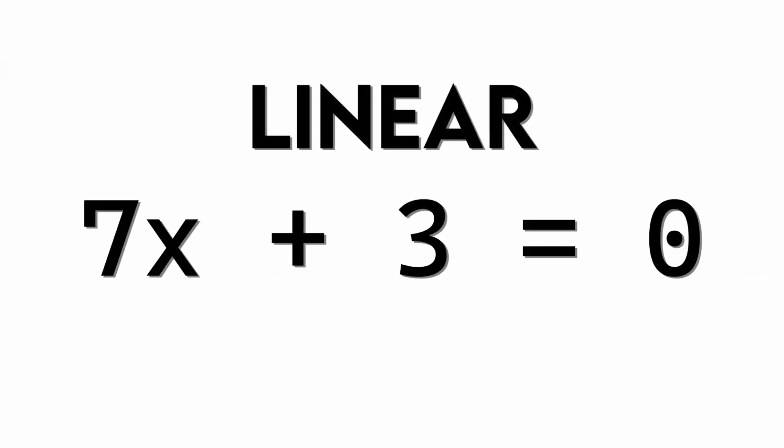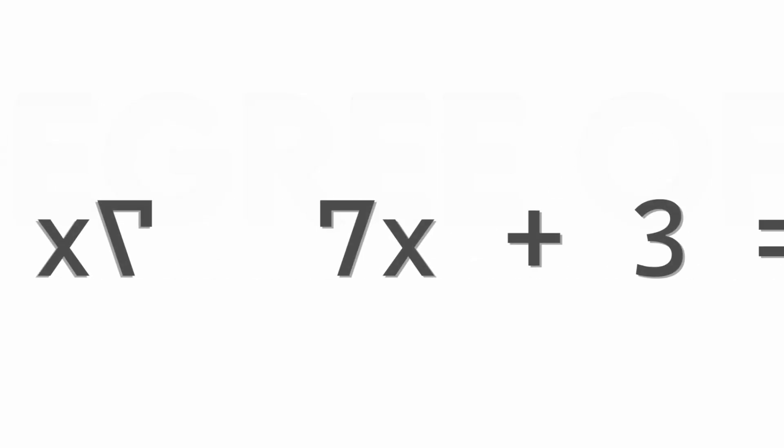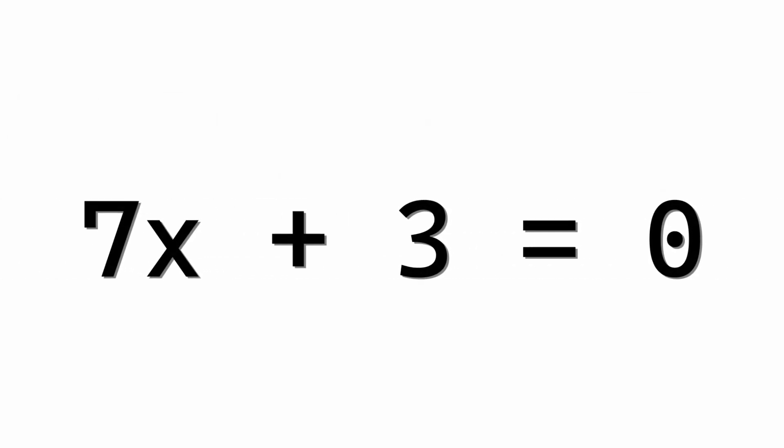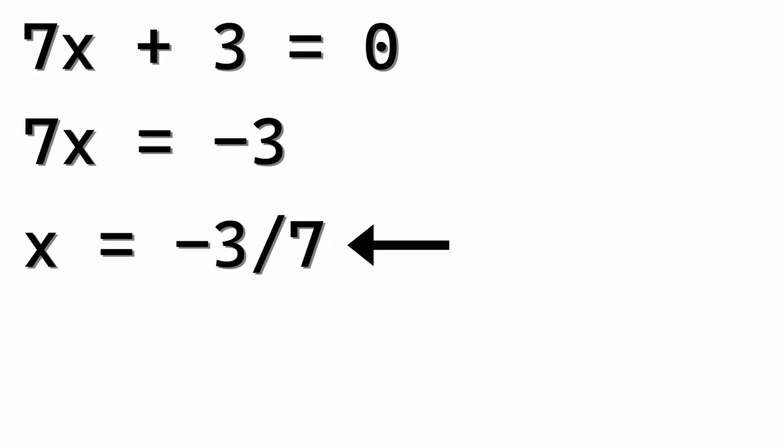This equation is linear, or degree of one. So what does degree in mathematics mean exactly? Well, the degree of an equation is linked to the index of its pronumeral. This is to the power of one. Thus, it is a degree of one. Linear equations such as this can be solved simply by rearranging the terms, and one solution can be found.